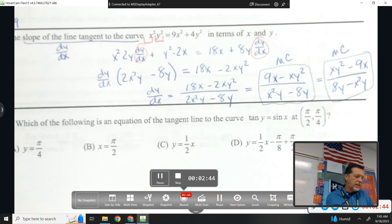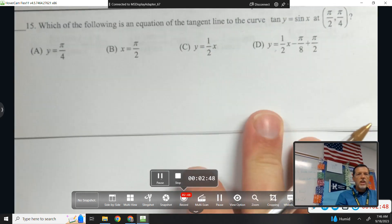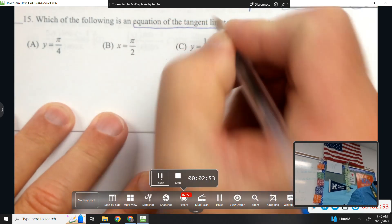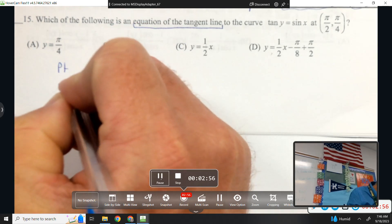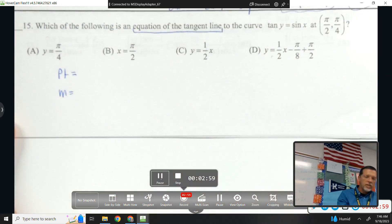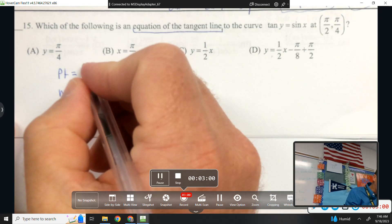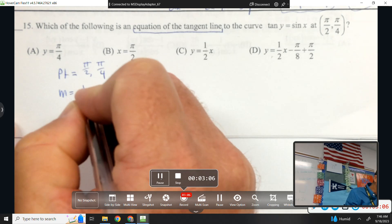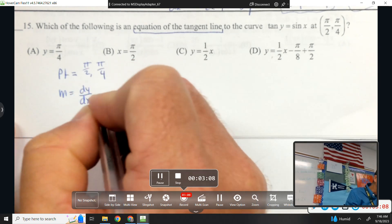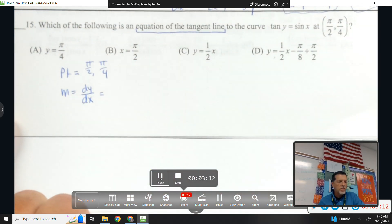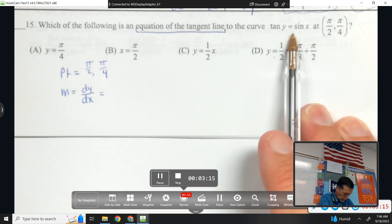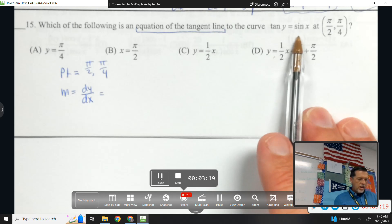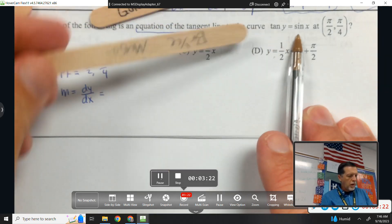Let's do number 15 together. Which of the following is the equation of a tangent line. So I need a point and a slope if I'm doing a tangent line. The point they just give me, pi over 2 comma pi over 4. The slope will be the derivative at that point. So I need to take a derivative of this weird-looking equation. There's only two sides, so I can pull two popsicle sticks anyway.